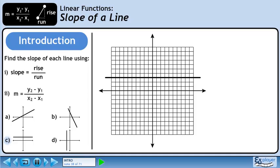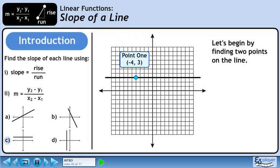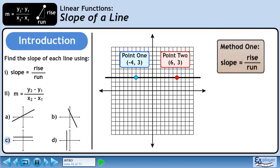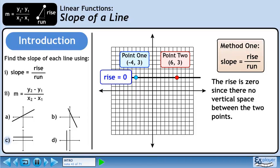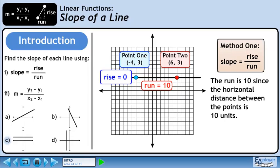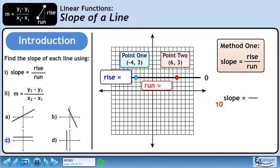In part C, we'll find the slope of the horizontal line shown. Let's begin by finding two points on the line. We'll use the ordered pair minus 4, 3 for point 1, and another ordered pair for point 2. Using slope equals rise over run: the rise is 0 since there is no vertical space between the two points, and the run is 10 since the horizontal distance between the points is 10 units. Plugging in gives us 0 over 10.